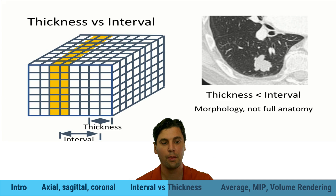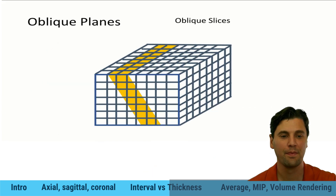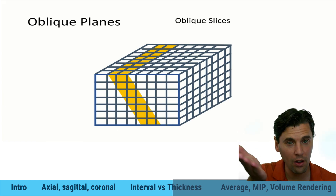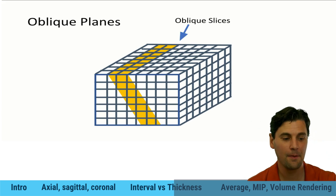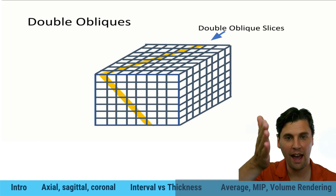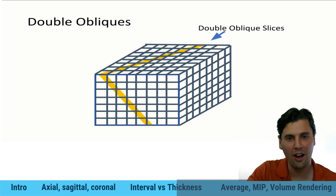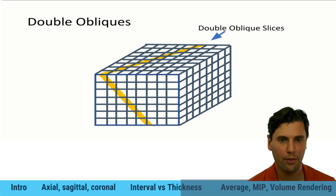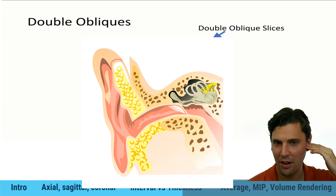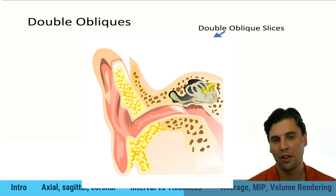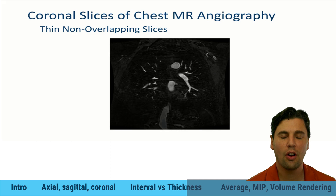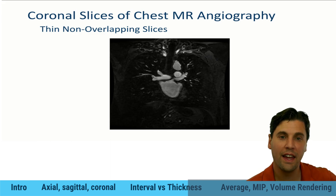If you take that volume and cut it at an angle, that's called an oblique slice. If you cut it at a double angle — not along either of the standard planes — that's called a double oblique. These are commonly used in generating reformats for reading anatomy such as the inner ear, where you want to be aligned along specific bones or anatomy of interest.